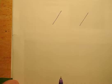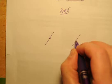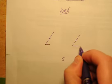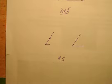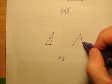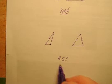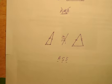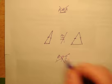What about ASS? Here's an example: if you've got two lengths that are the same and an angle that's the same, you can connect the sides at the same length but end up with triangles that are not congruent. So ASS does not work.